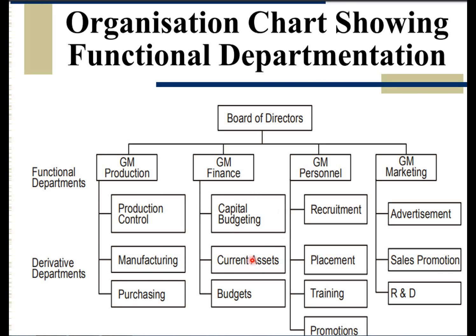Under the finance department, major functions include capital budgeting, current asset evaluation, and budgets. Under GM personnel, functions include recruitment, placement, training, and promotions. The marketing department covers advertisement, sales and promotion, and R&D. This is how various departments are grouped on the basis of their functional activities — this chart shows an organization based on functional departmentation.